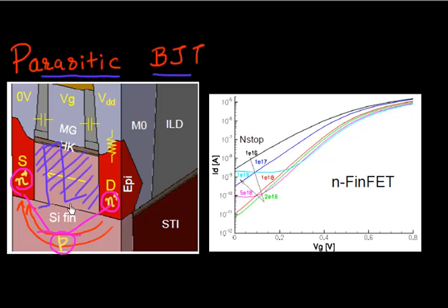So this is a big problem and it has always been a problem for bulk technology that you get this parasitic BJT below your actual MOSFET device. And the way people try to mitigate its effect is by, in this FinFET device, by doping this region below the fin, below your channel by a very high doping. So what they try to do is increase the doping over here.